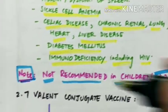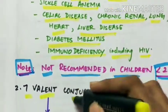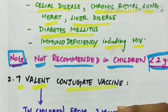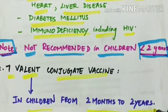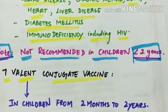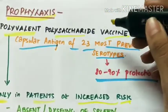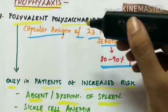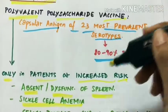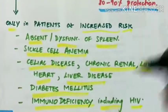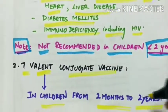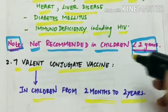The second type of vaccine is 7-valent conjugate vaccine. So this is given for children from 2 months to 2 years of age because for them the polyvalent polysaccharide vaccine is not given. So the two types of vaccines include polyvalent polysaccharide vaccine which has capsular antigen of 23 most prevalent serotypes. This is administered in patients at increased risk. And 7-valent conjugate vaccine. This is for children from 2 months to 2 years of age where the polyvalent vaccine is not recommended.